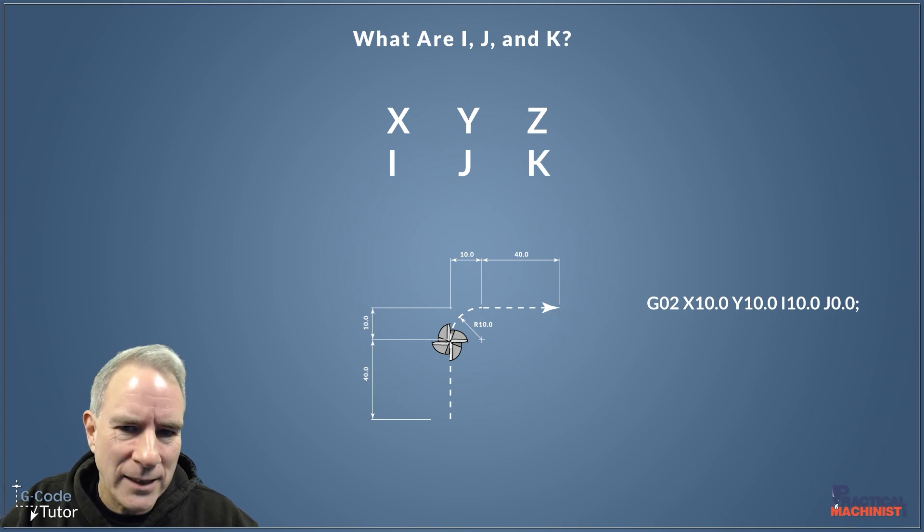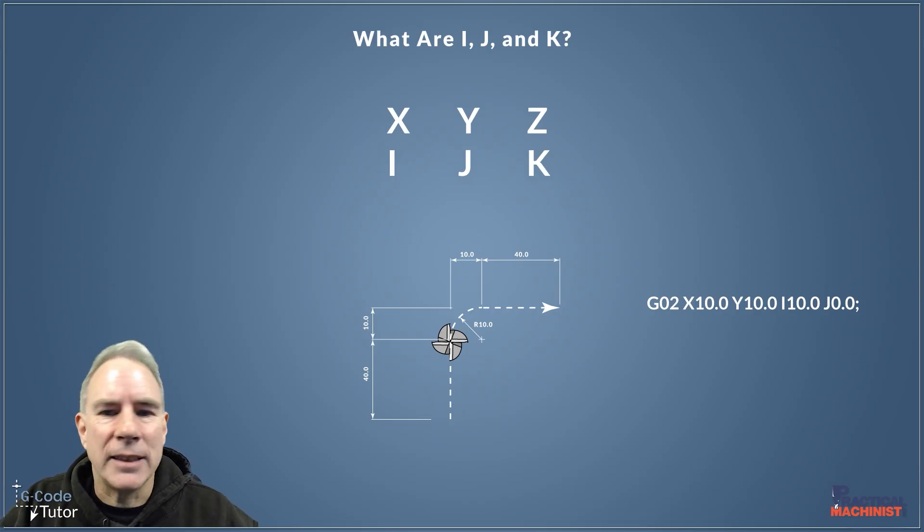That's where we want our tool to finish up. And then we use I to tell the cutter that 10 millimeters to the right of it right now is the center point of the radius. And with J0 there, it's saying it's in line on the Y axis, it's level with the tool. So we would issue zero for that. Now that would cut that clockwise axis, that G02 there, using that as a center point, and it would finish on the X and Y positions that we give it.